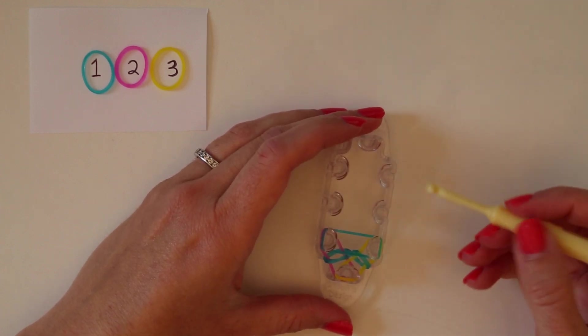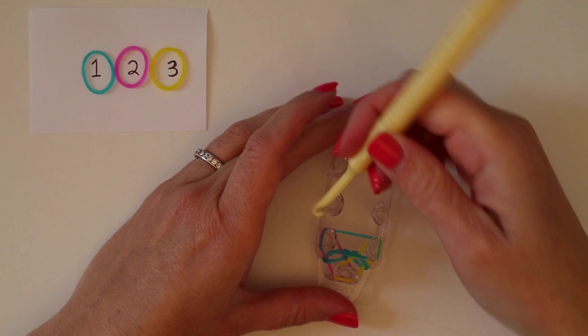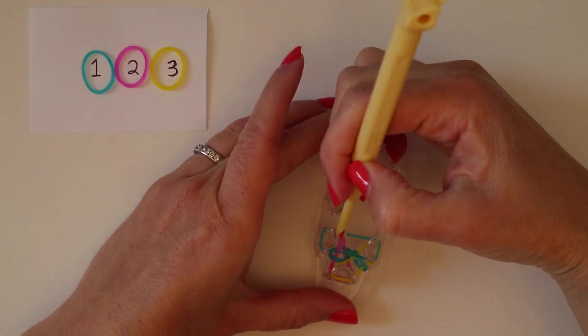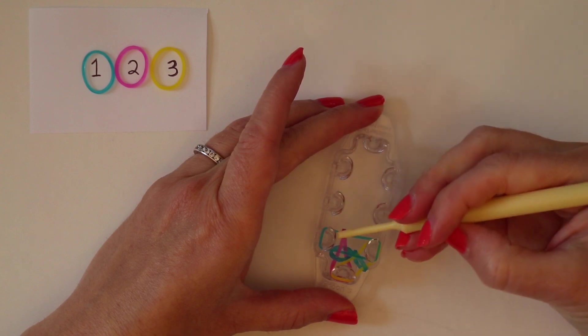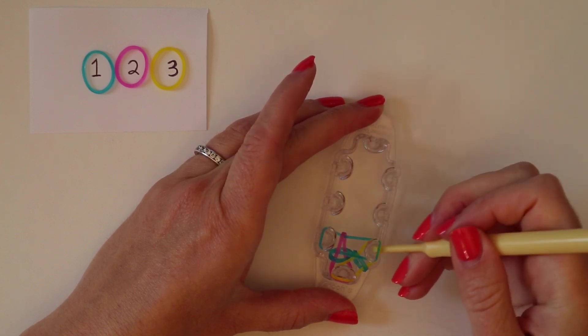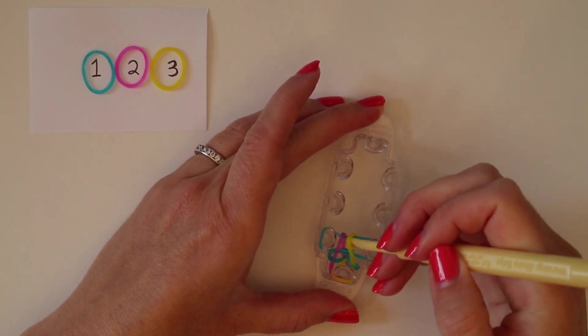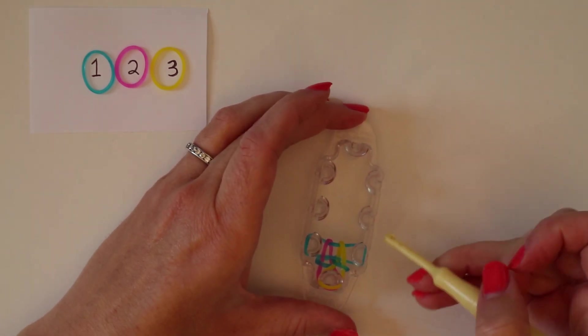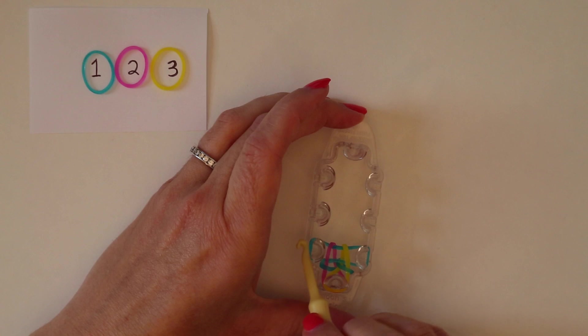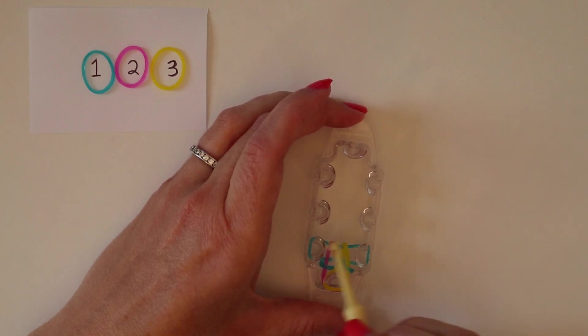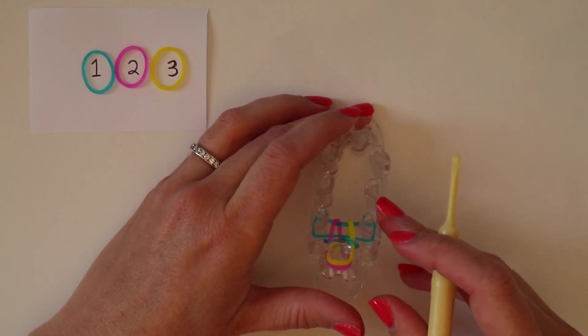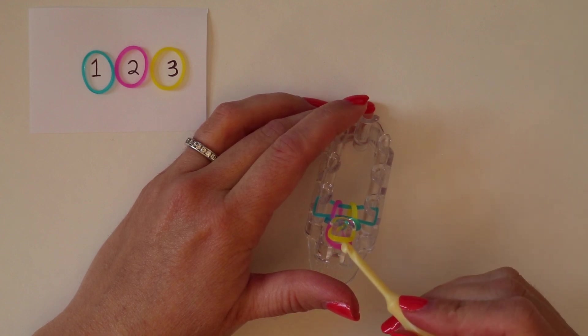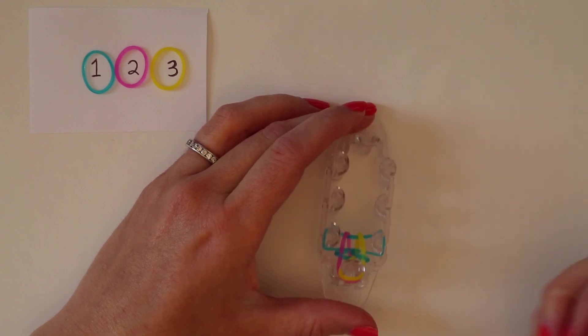Then, we're going to take color two up and over that back peg, and color three up and over the other back peg. So, we should look like this now with just one color one band across the two back pegs, and your front peg should have color two on the bottom and color three on top.